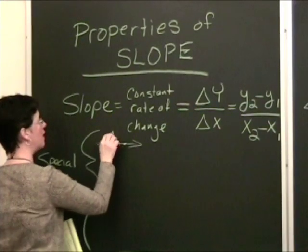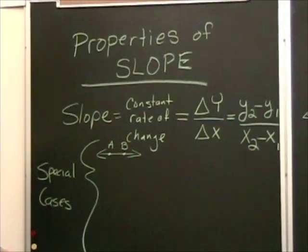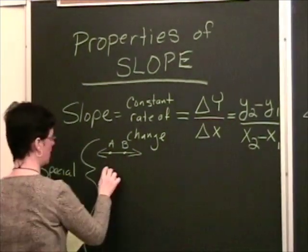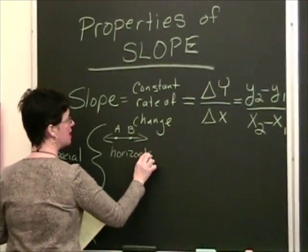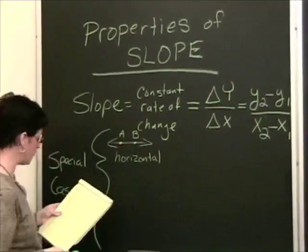And they are a and b. This is a horizontal line. So horizontal will be our first special case.